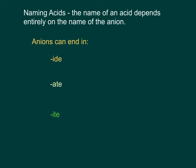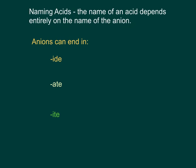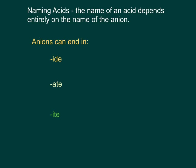So let's talk now about how to name acids. Since an acid is always H plus some anion, then the name of the acid depends completely on the name of the anion.